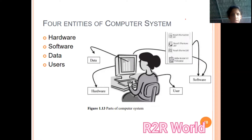Welcome to the next class. Today we are going to see about the processor, memory, and input/output devices of a computer system. Basically, we can say there are four parts of the computer system: hardware, software, data, and users. As you can see in this diagram, these are the different entities of the computer system.